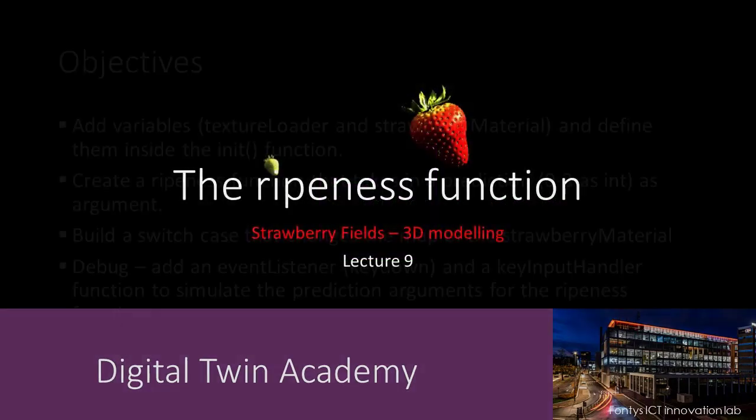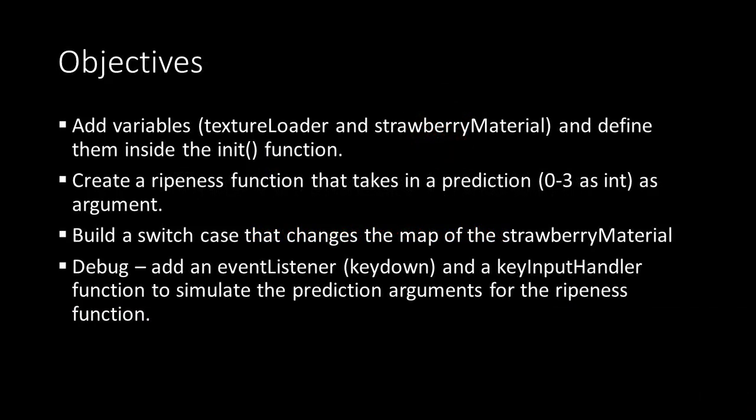Welcome to lecture 9. In this lecture we'll add some variables to the list for our strawberry material. We'll create a ripeness function that takes in the prediction using a switch case that changes the map in the strawberry material.